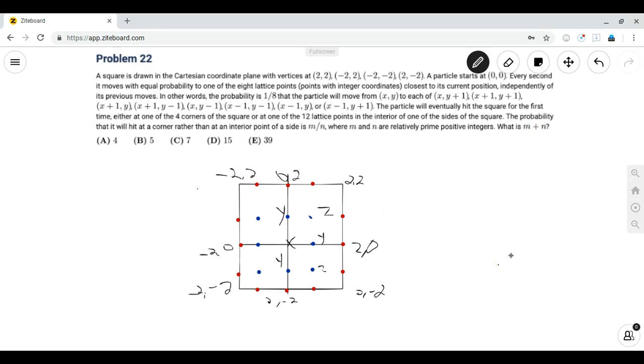Basically, the particle has many different stages or positions it could be in while on this walk, so we just want to set up equations to model each of these and then solve for the equation that relates to the origin. Since the origin is in the center, let's just call it point X, and let's let P(X) be the probability that the particle would hit a corner instead of a side for the first time.